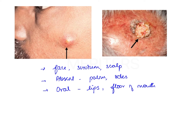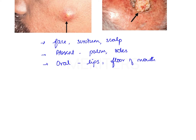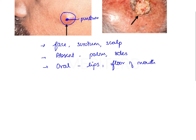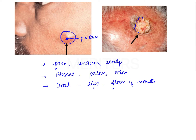The sebaceous cyst develops due to blockage of the sebaceous gland ducts, leading to accumulation of sebaceous gland secretions. The most important feature is the presence of a punctum — a black depressed dot within the lesion — which acts as a pathway through which the sebaceous secretions are expressed. The second picture shows an ulcerative fungating mass known as Cock's peculiar tumor, which is a complication of untreated sebaceous cyst.